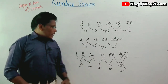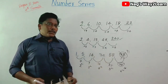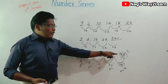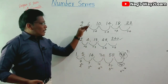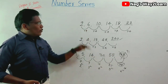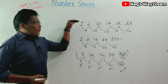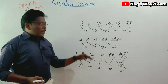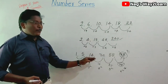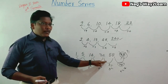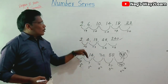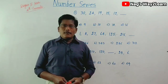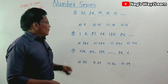So in this way there are 2 models. In the 1st model, you have to find the next number. In the 2nd model, you have to find the wrong number. There are 2 types in the number series. Now let's do some problems.